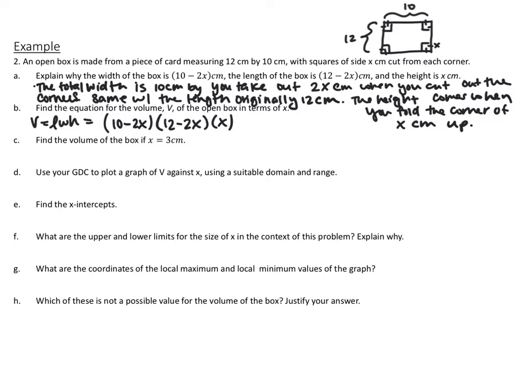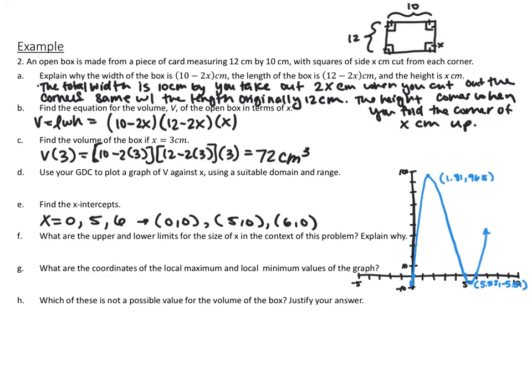Using the function, find the volume of the box if x = 3 cm. Plugging in 3 for x gives 72 cubic centimeters. The graph has x-intercepts at x = 0, 5, and 6, and I also plotted the local maximum and local minimum on the sketch.